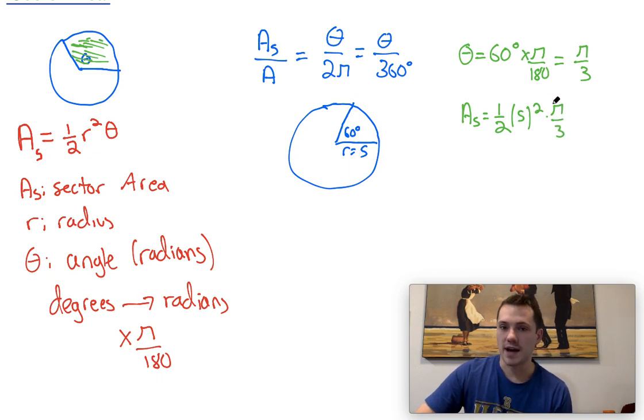5 squared is 25. Multiplying straight across the top, we would end up with 25 pi. Straight across the bottom, we would end up with 6. All right, so that's one way that we could do it.